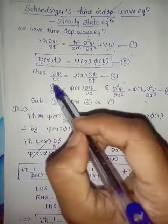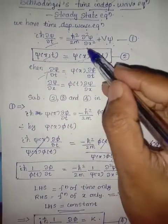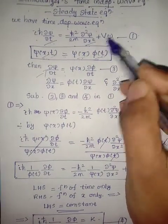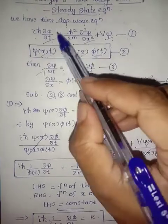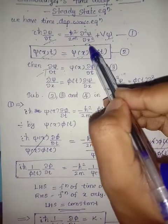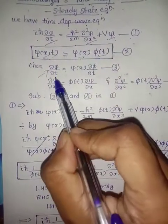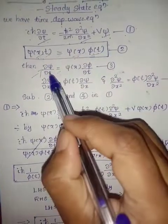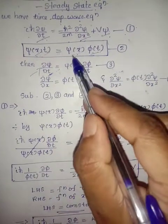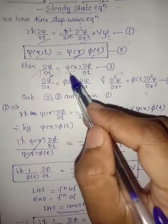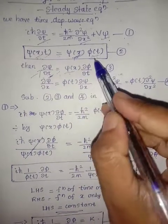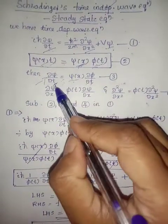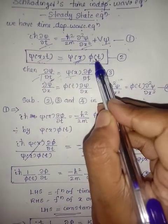Now we need to find ∂ψ/∂t, ∂²ψ/∂x², and ψ for substitution. First, finding ∂ψ/∂t: when differentiating with respect to time, position is treated as a constant, so ψ(x) is constant. Therefore, ∂ψ/∂t = ψ(x) · ∂φ/∂t, where we differentiate only φ(t) with respect to time.